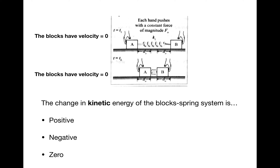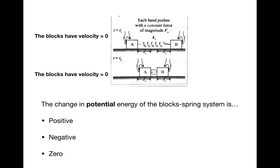The change in kinetic energy of the block-spring system is zero because the blocks start with zero kinetic energy and also end with zero kinetic energy. For the change in potential energy, the spring starts out relaxed and is compressed at the end, so the change in potential energy is positive. The potential energy of a spring is given by one-half kx squared, where x is the displacement from equilibrium, so the compressed spring will have some potential energy.